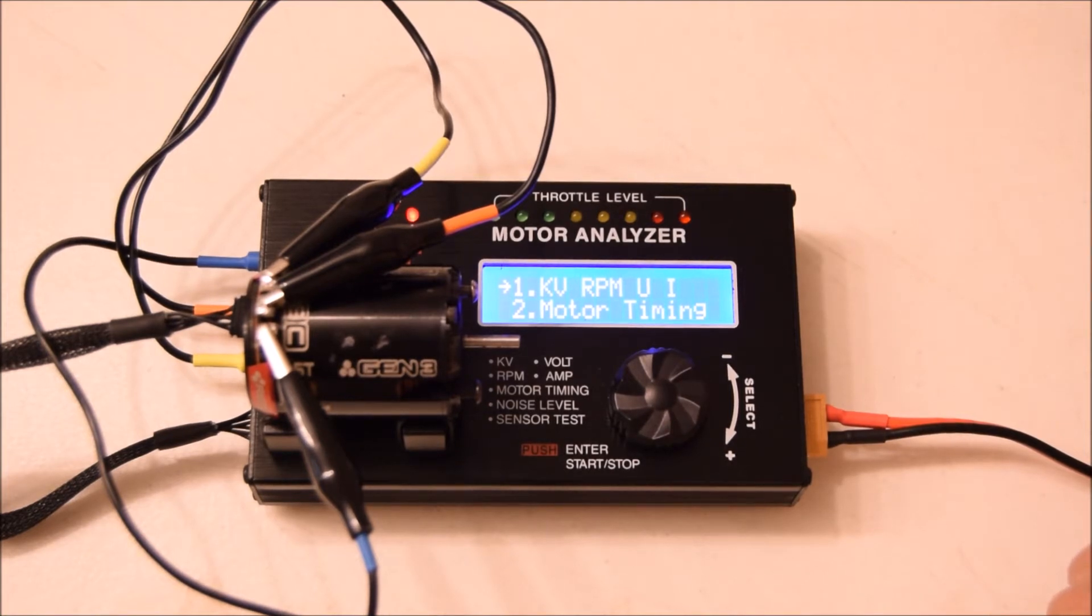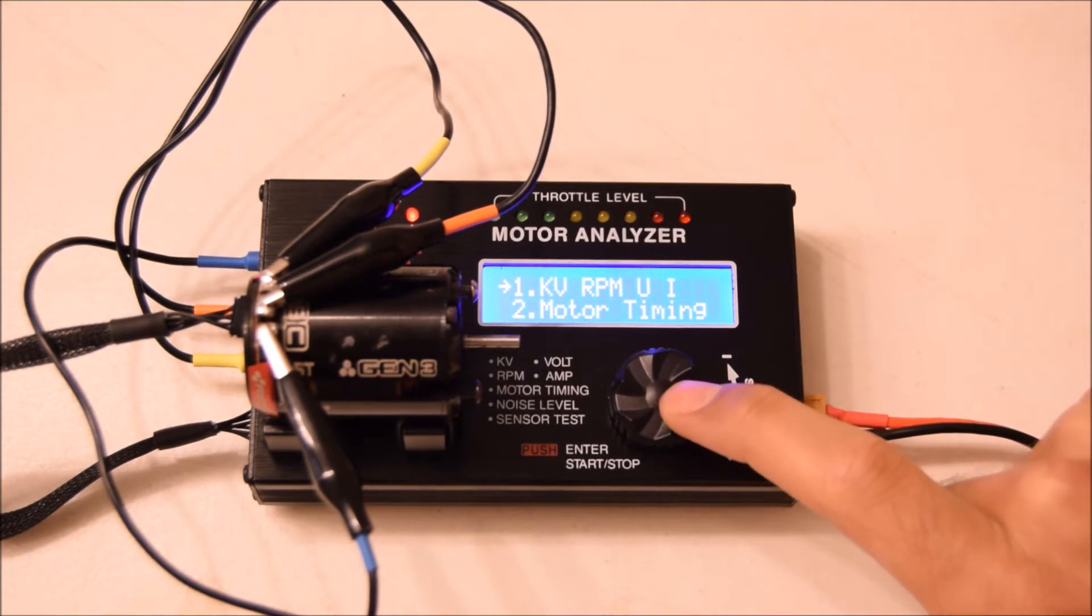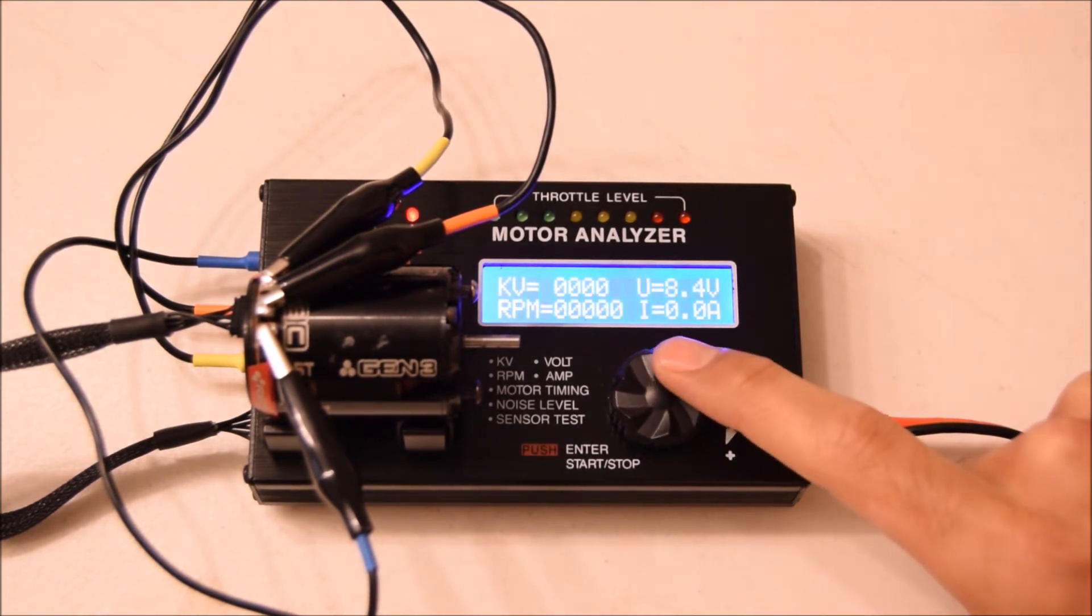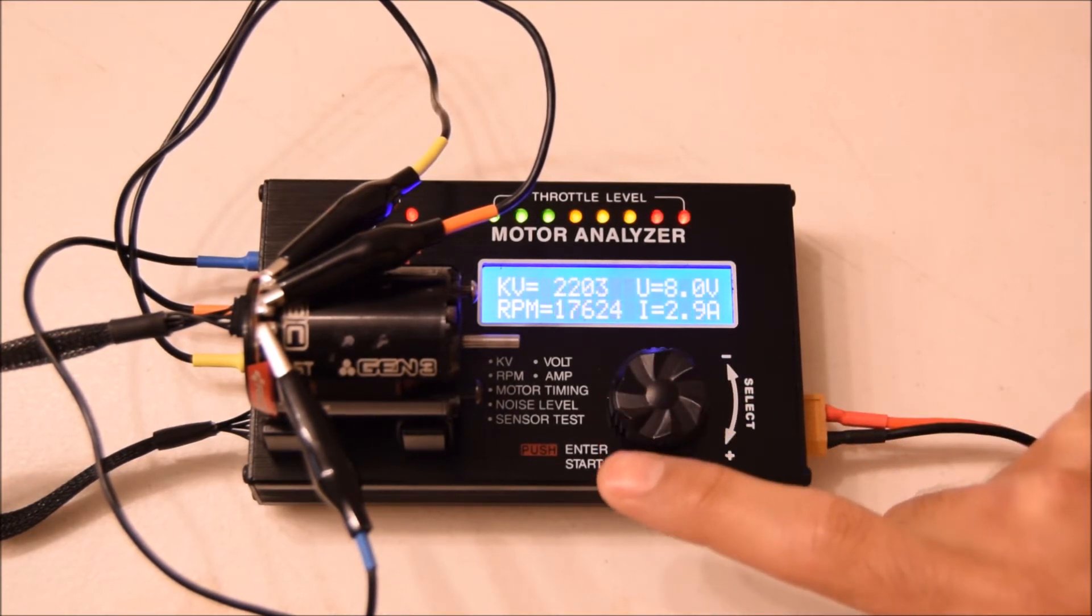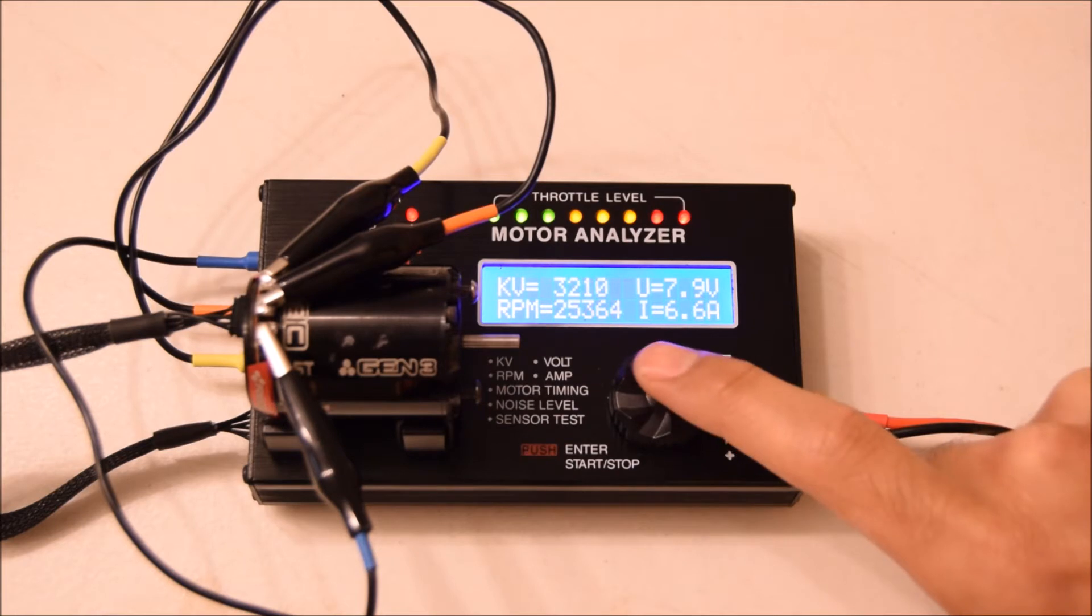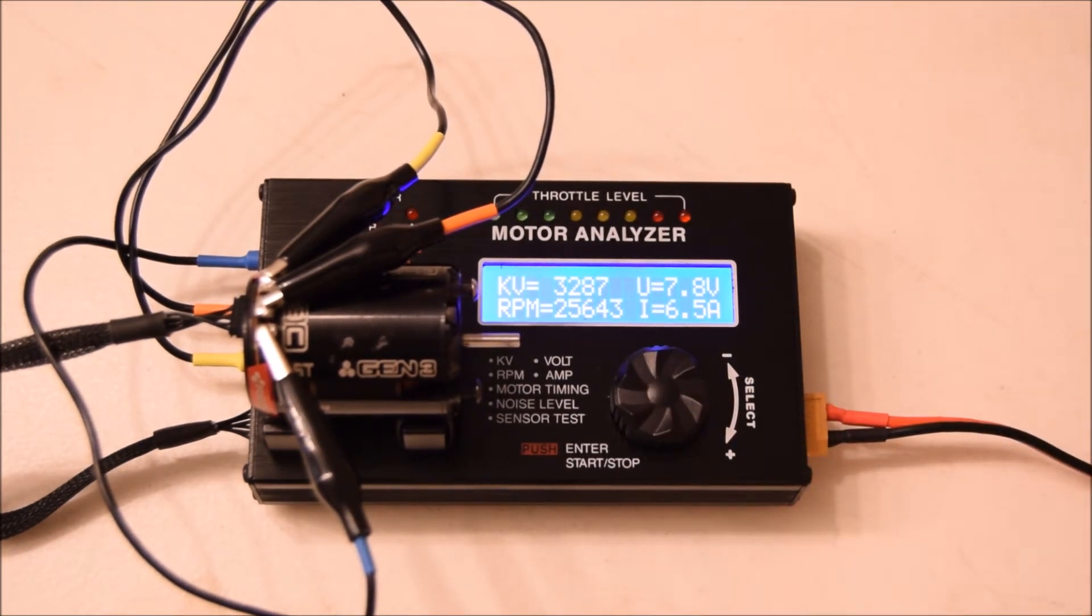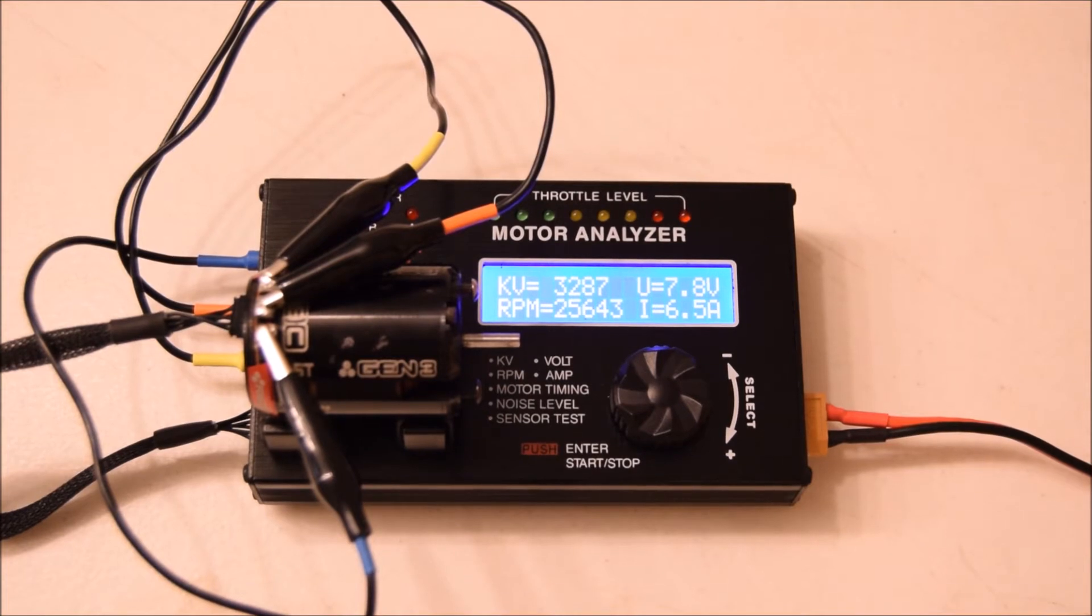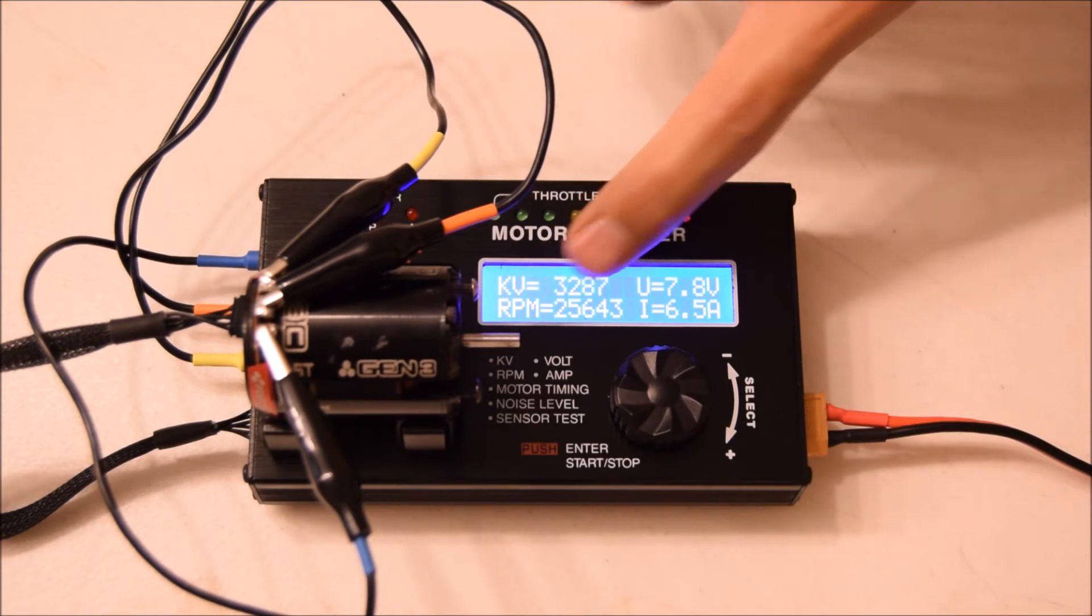The first test we can do is the KV and RPM, and I'm going to go ahead and do that right now. Here we have the KV, voltage of the battery, RPMs the motor was spinning, and how many amps it was pulling.